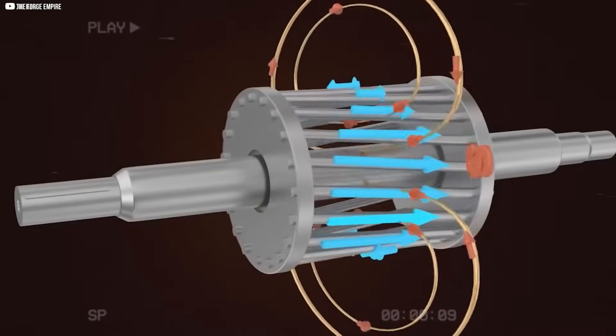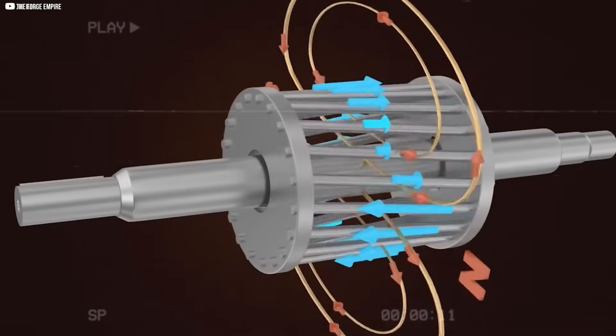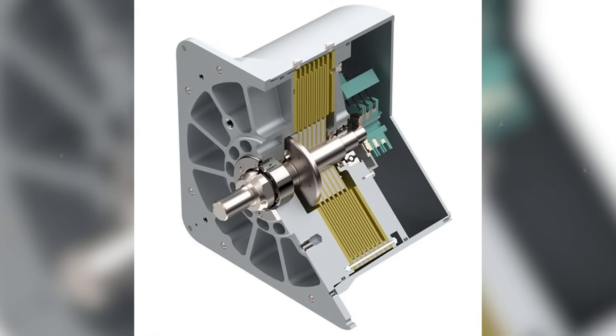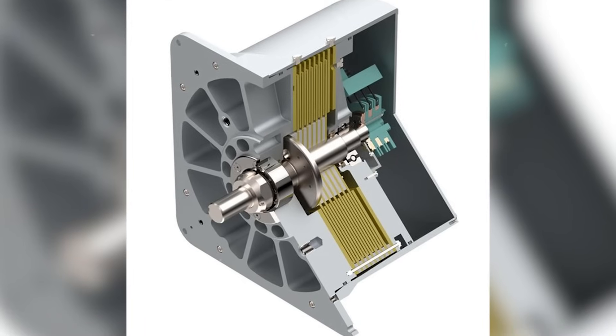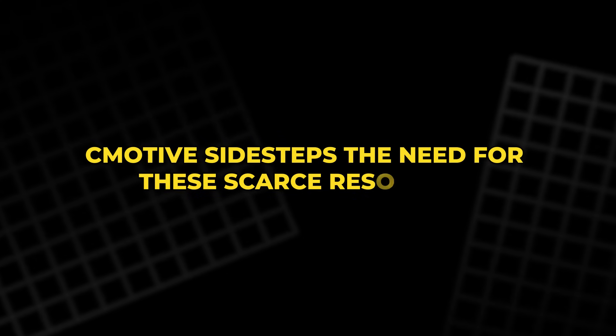It leaves chemical waste and creates long supply chains that can break under pressure. By designing a motor that operates only on voltage differences, C-Motive sidesteps the need for these scarce resources.